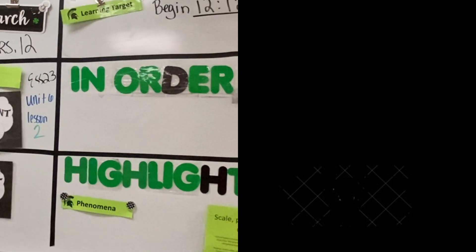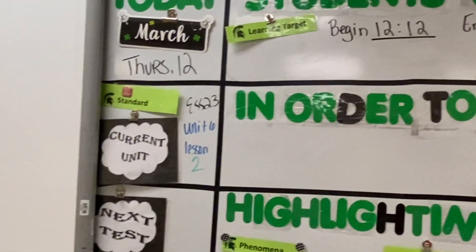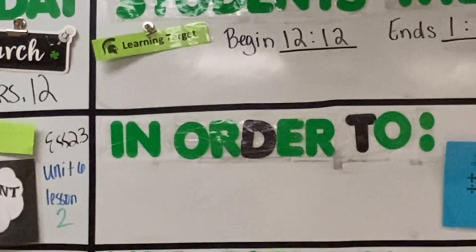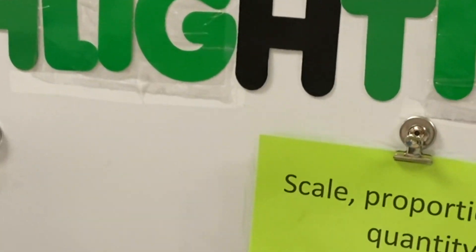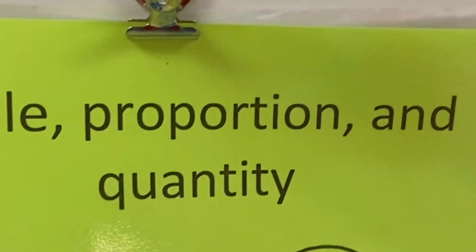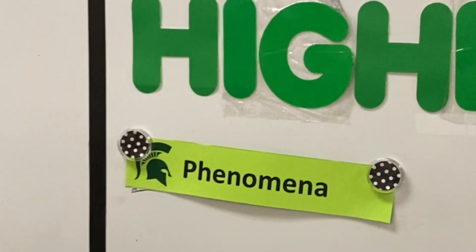This is my board. Today's date — which is wrong right now. I have the current unit and our next test date, which is usually up there. Then 'Students Will' with their learning target. That would usually be our science and engineering practice or principle. And then highlighting what specifically we're concentrating on in that science and engineering practice — that would be our cross-cutting concept. I would put the cross-cutting concept there and the phenomena that we're working on.